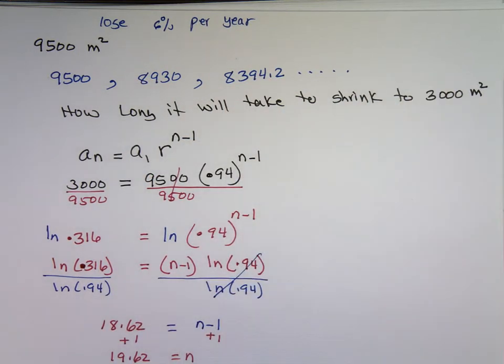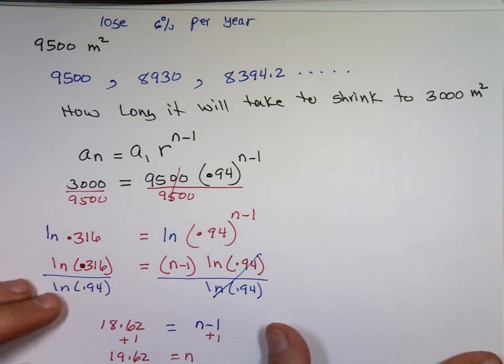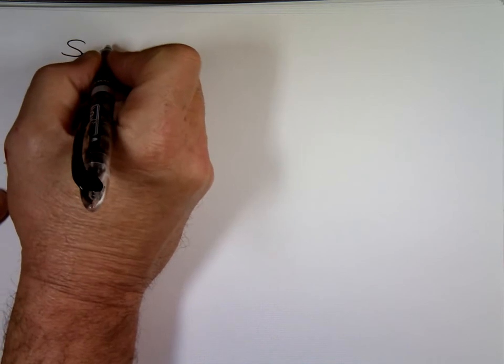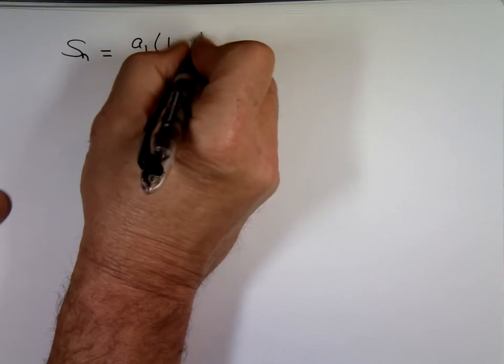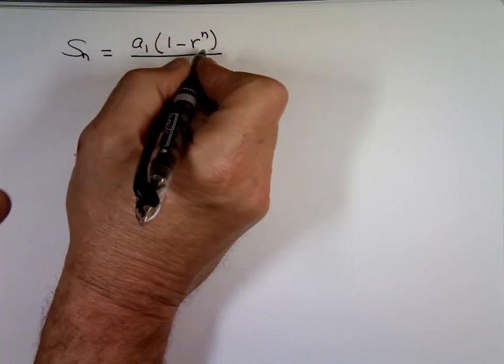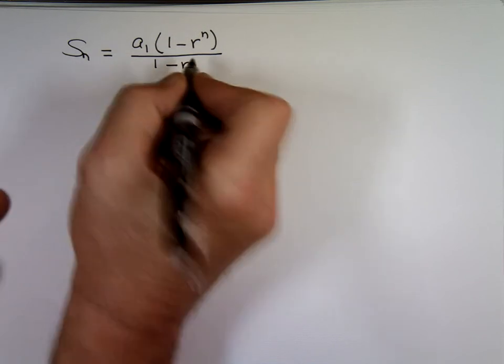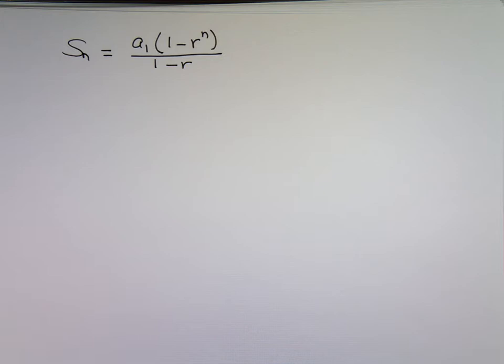So do we have an equation that will find the sum for us? Yeah. Yeah, we do. So, we'll find the total land of the sum. The equation for the sum is a1 times 1 minus r to the n, the whole thing divided by 1 minus r. a1 times 1 minus r to the n over 1 minus r.